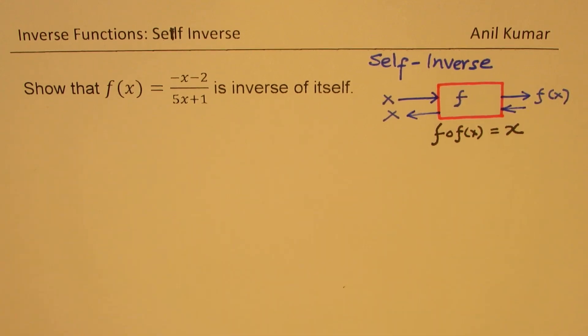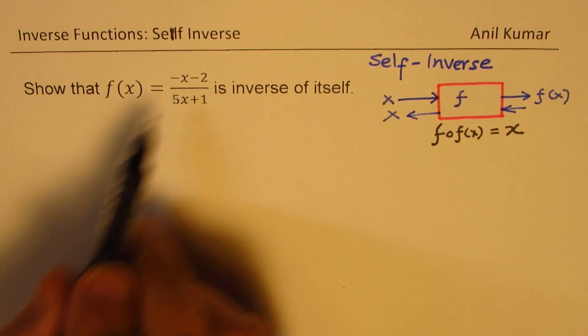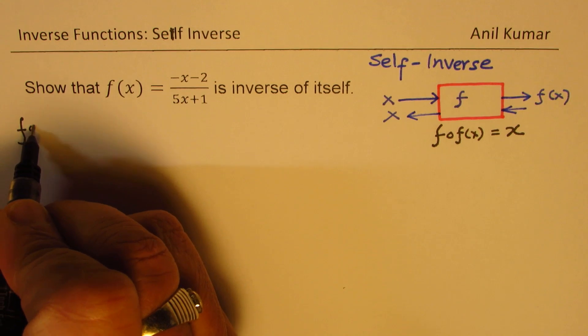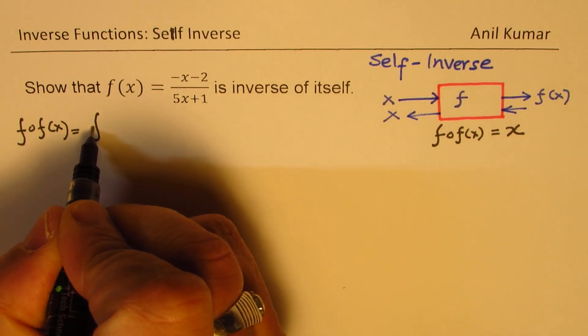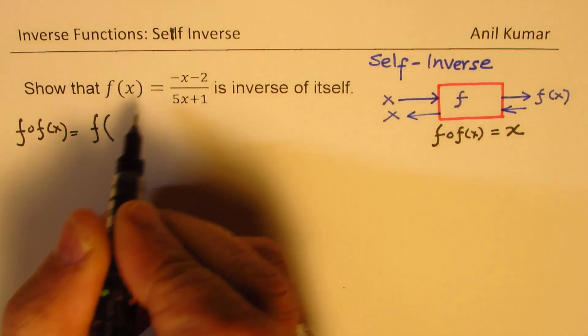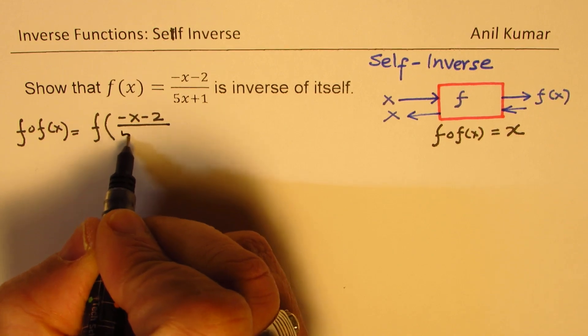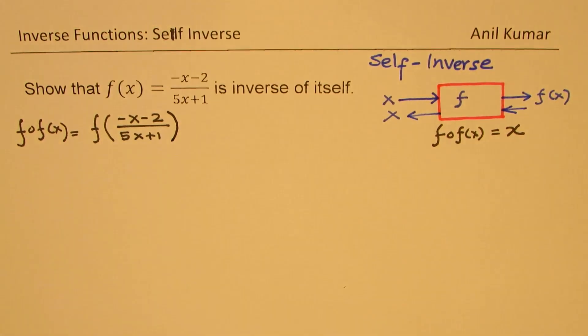So with that in mind, let's begin with the solution. So we are given that f of x is this. Let's figure out what is f of f of x. So basically, it is f of all this, which is minus x minus 2 over 5x plus 1.